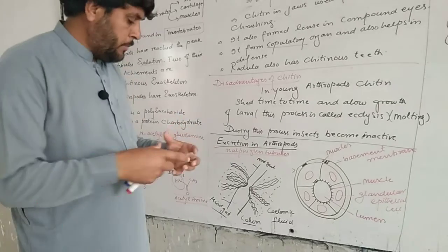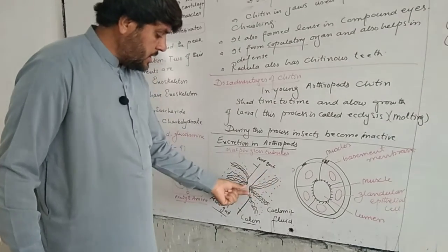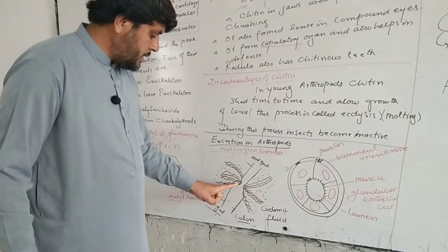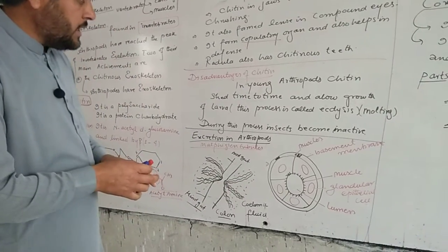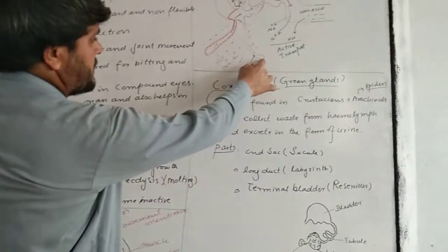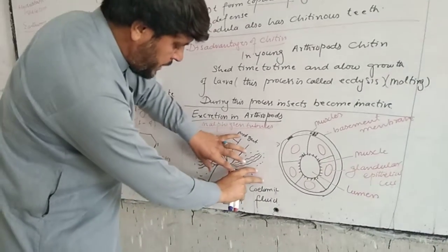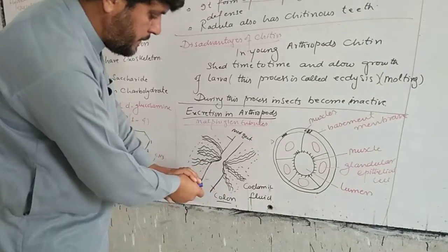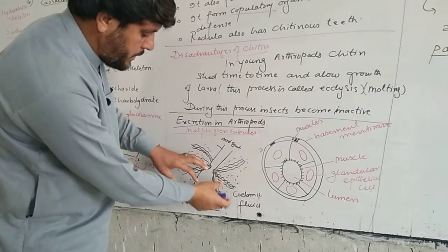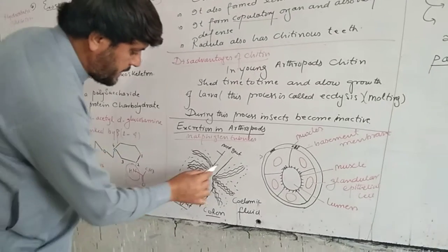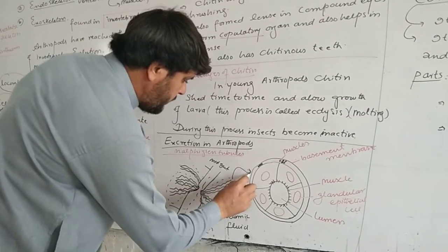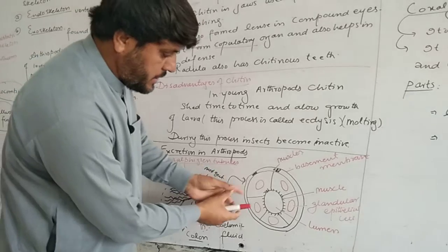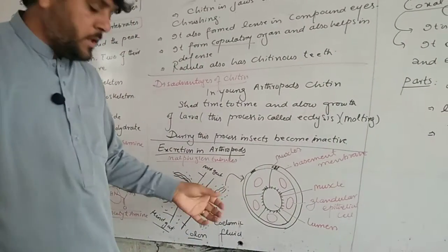The excretory organ is called Malpighian tubules. A scientist discovered this thread-like structure. These are blind sacs attached at the junction of hindgut and midgut. Point to be noted: these are closed at one end, hence called blind sacs. These Malpighian tubules have cells in which waste material is absorbed by the process of active transport and diffusion, then enters the main channel and is excreted out of the body.